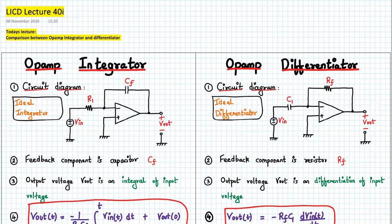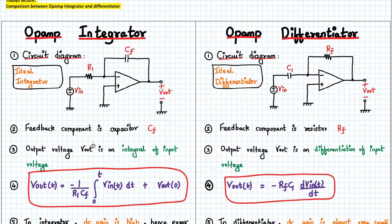The first point is the circuit diagram for ideal integrator and ideal differentiator. The feedback element for the integrator is a capacitor, and the feedback element for the differentiator is a resistor, whereas the input element here is R1 and for the differentiator it is a capacitor. So the feedback component is CF for the integrator and RF for the differentiator.